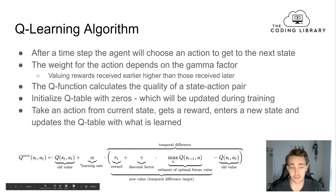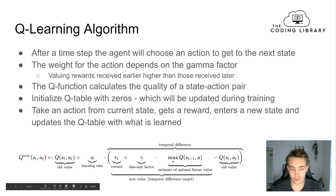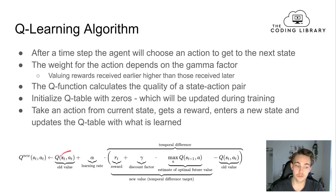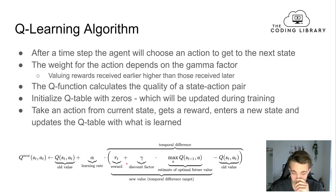The Q-function we're going to use to update our Q-table works as follows: the new Q-value equals the old Q-value plus alpha — the learning rate — multiplied by a temporal difference term. The learning rate specifies how fast we want to learn the new things we discover by taking a new action in a given state.